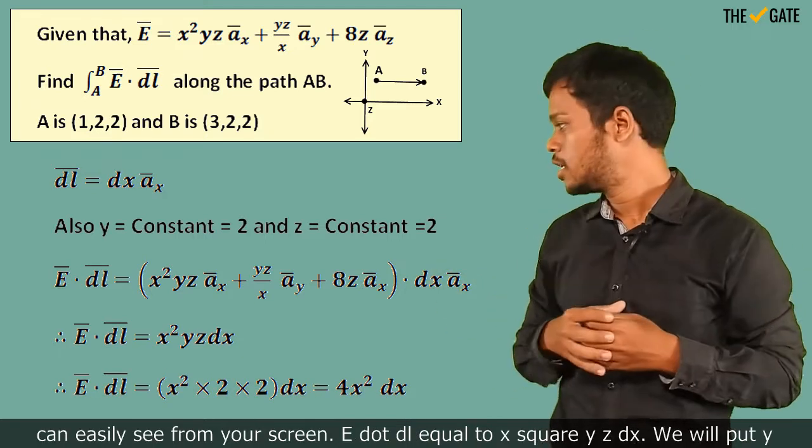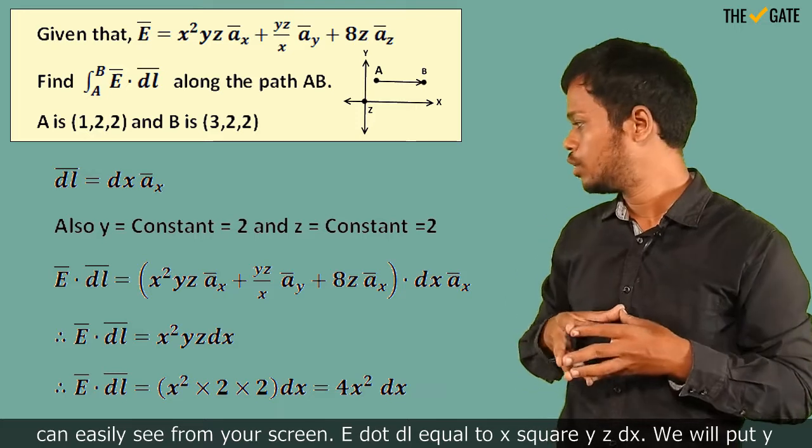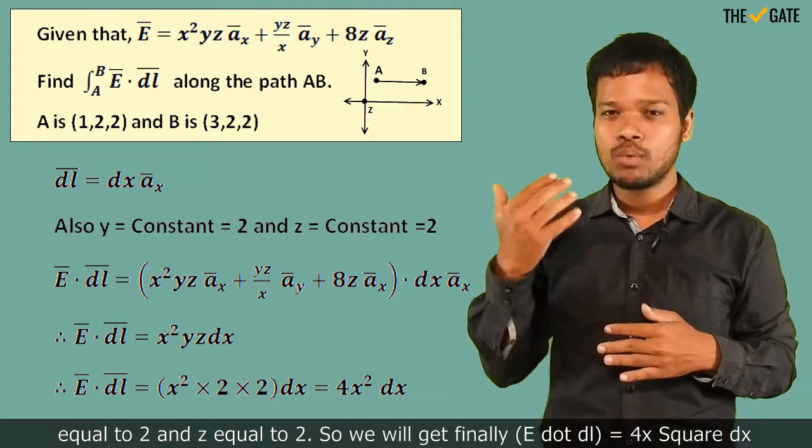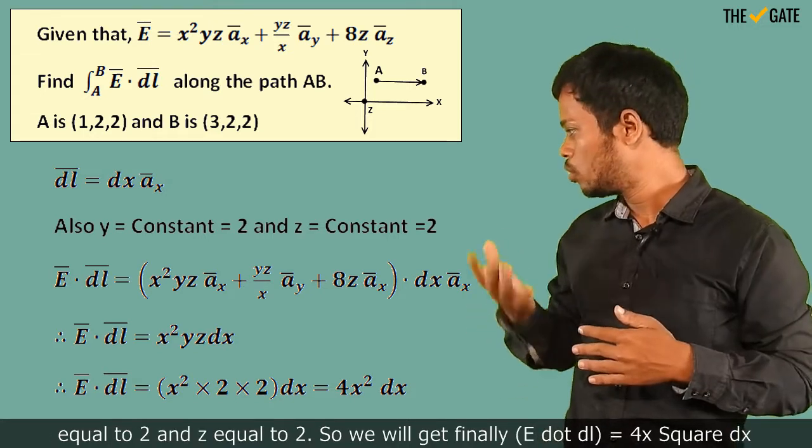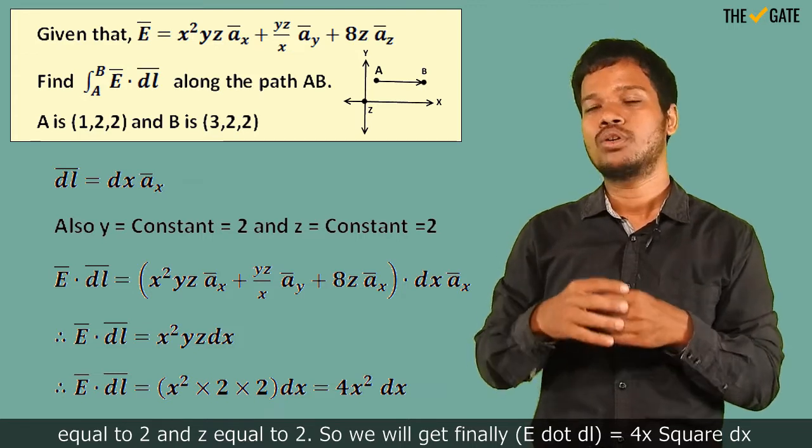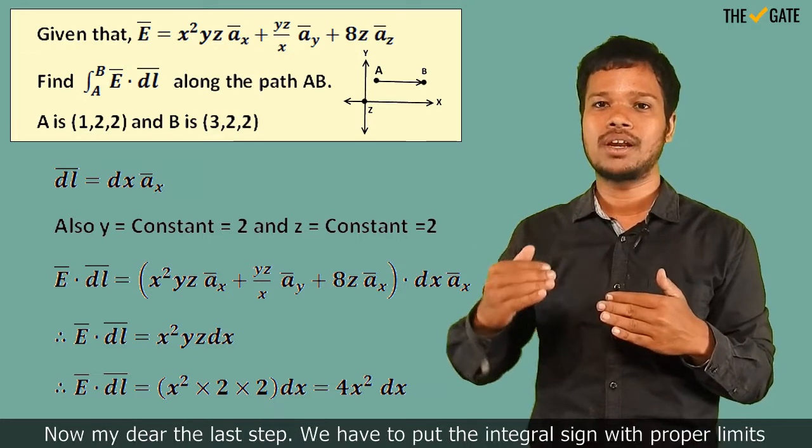So, E dot dl will come out as you can easily see from your screen: E dot dl = x² y z dx. We will put y = 2 and z = 2, so we will get finally E dot dl = 4x² dx.